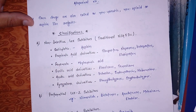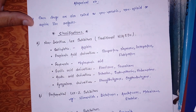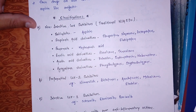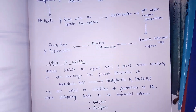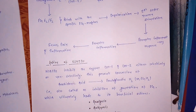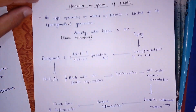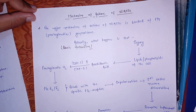The various classifications of these drugs are: non-selective COX inhibitors, preferential COX-2 inhibitors, selective COX-2 inhibitors, and analgesics with poor anti-inflammatory actions. The next thing is the mechanism of action of NSAIDs.